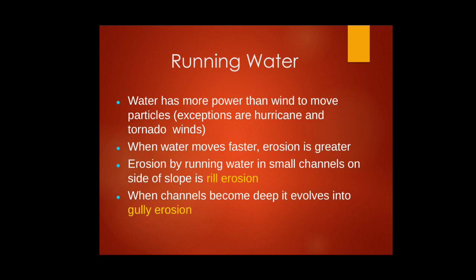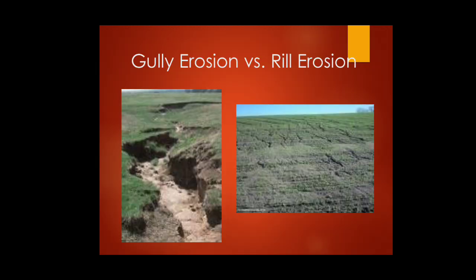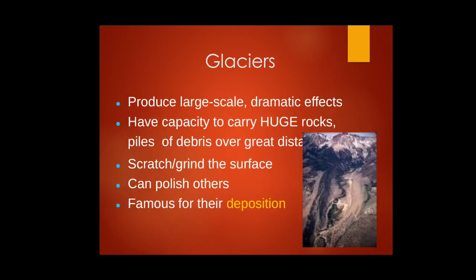Erosion by running water in small channels on side slopes is called rill erosion. When the channel becomes deep, it evolves into gully erosion. The left image shows gully erosion and the right shows rill erosion. Rill erosion forms little channels in the earth's surface, which over time develop into gullies. Glaciers, when falling as avalanches, carry and break down massive rock material, plants, and shrubs beneath them, producing dramatic effects.